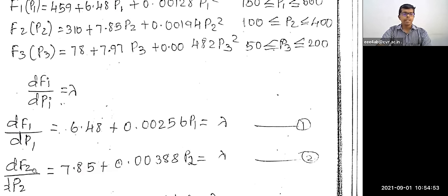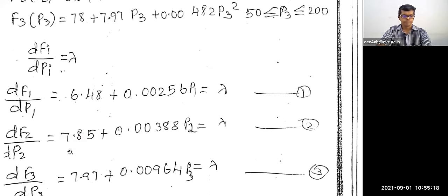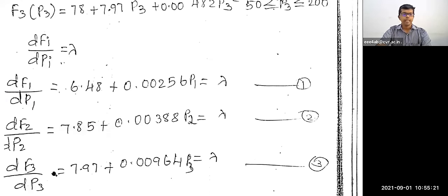Differentiate fuel cost function F2 with respect to P2: DF2/DP2 = 7.85 + 0.00388·P2 = λ. Take this as equation number 2. Then DF3/DP3 = 7.97 + 0.00964·P3 = λ. Take this as equation number 3.